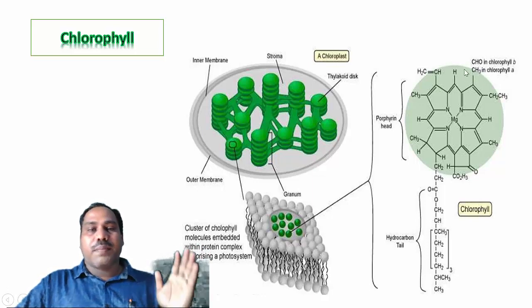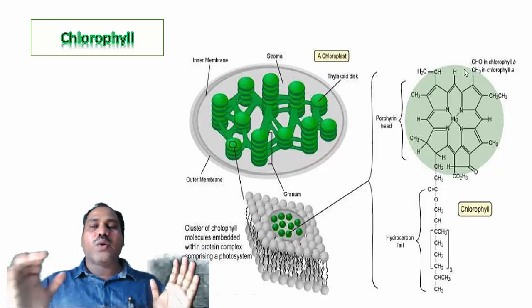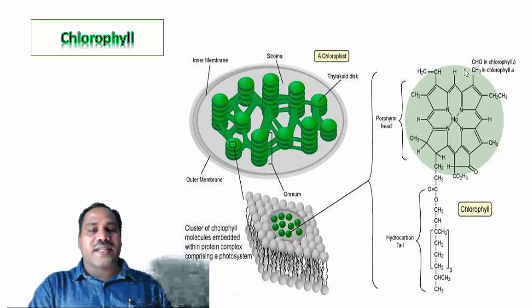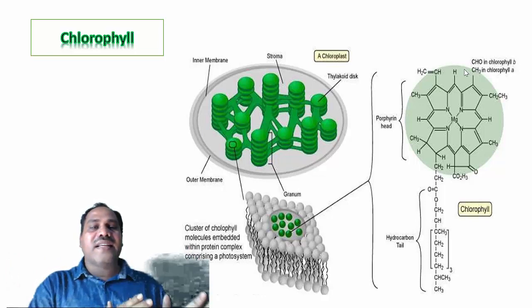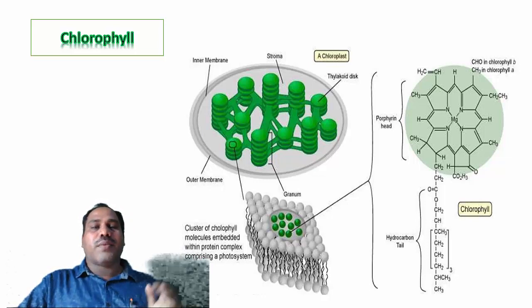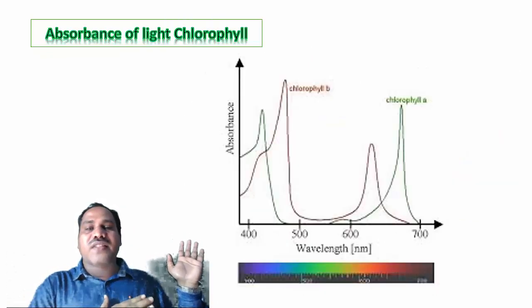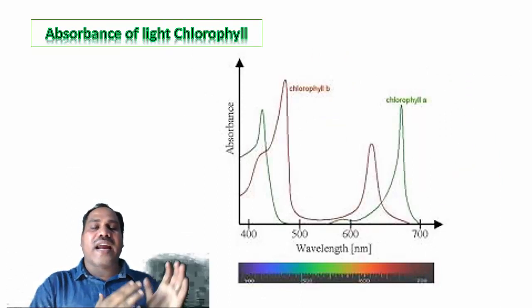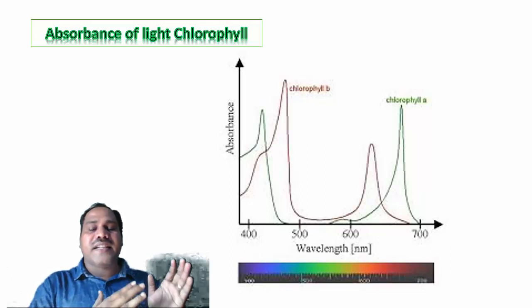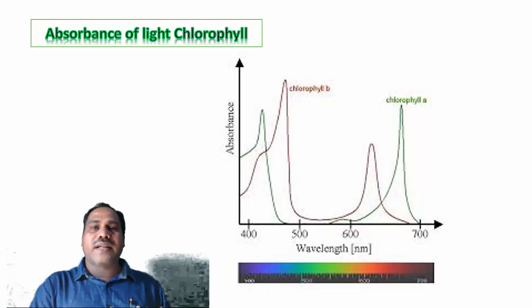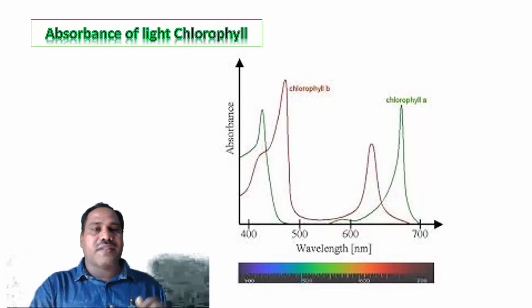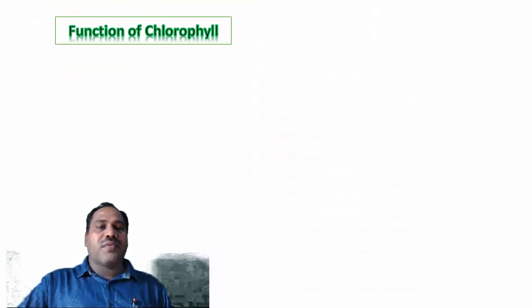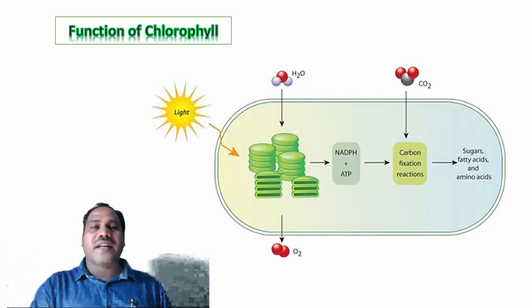The structure of chlorophyll a and chlorophyll b are exactly similar, except that methyl groups are present in chlorophyll a, whereas aldehyde groups are present in chlorophyll b. Both are present in the photosystems and drive photochemical reactions. This is the absorbance curve: chlorophyll absorbs in the blue and red regions.